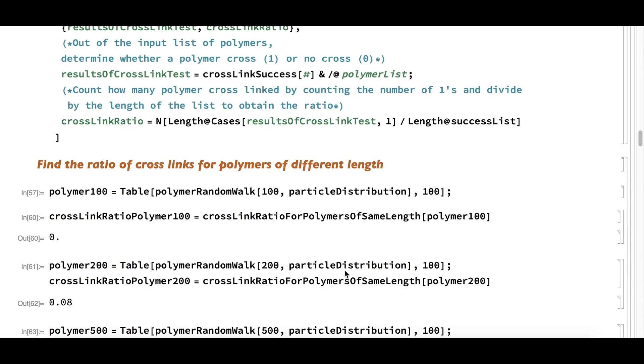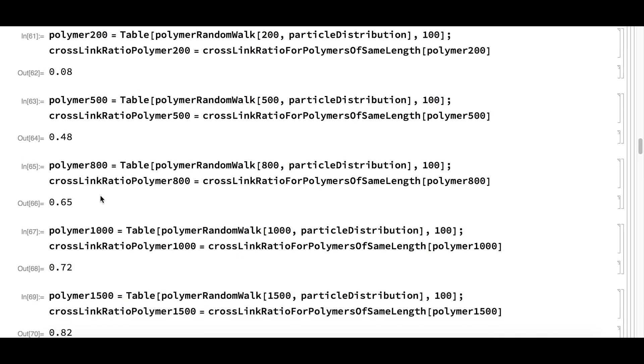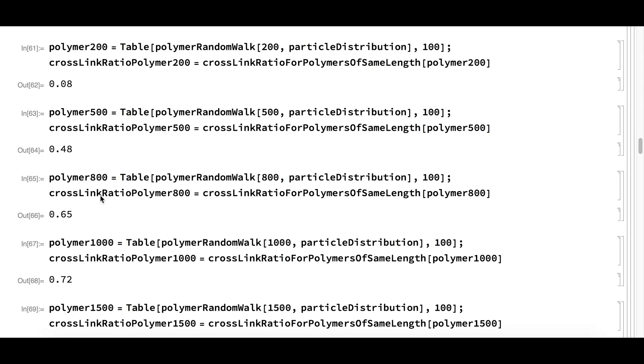Next, we calculate the ratio of cross-linking for polymers of various lengths: 100, 200, 500, 800, 1000, and 1500 subunits. Since the operation takes a while, I'll show just the results.